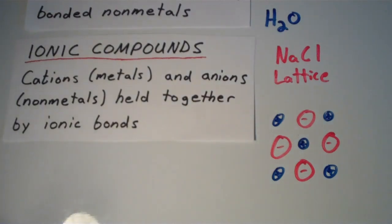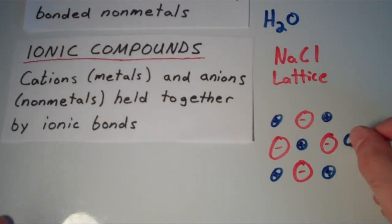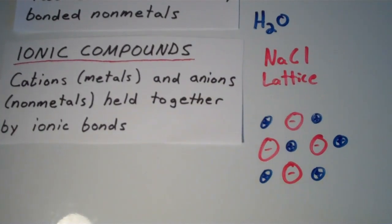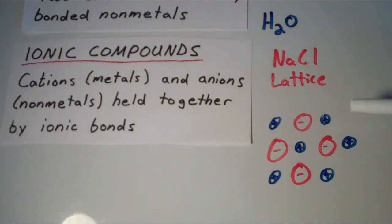Now, each one of these sodium ions is actually surrounded by chloride ions. And if we were to continue drawing this out, we would see that each chloride ion is surrounded by sodium ions. So ionic bonds are not directional.